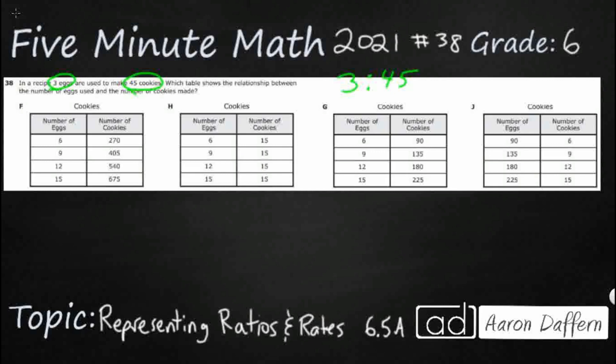Now obviously it would be really easy if one of these had that exact same ratio in its table, 3 eggs, 45 cookies, but it doesn't. So what we can do is we can just try to find something that is the simplified version of this.